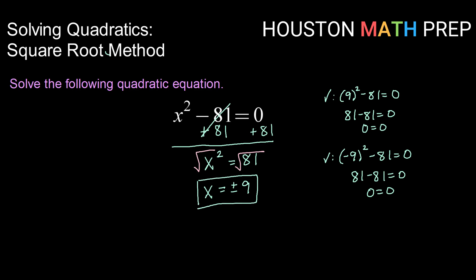So don't forget, when using the square root method, if you take the square root of both sides, make sure you consider positive and negative.